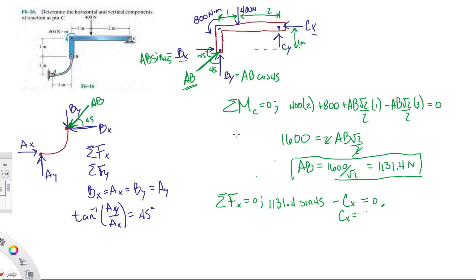And then in the Y direction, so it's going to be CY minus 400, there's a moment so we don't include it anywhere, and then plus BY which is 1131.4 cosine 45 equals 0.